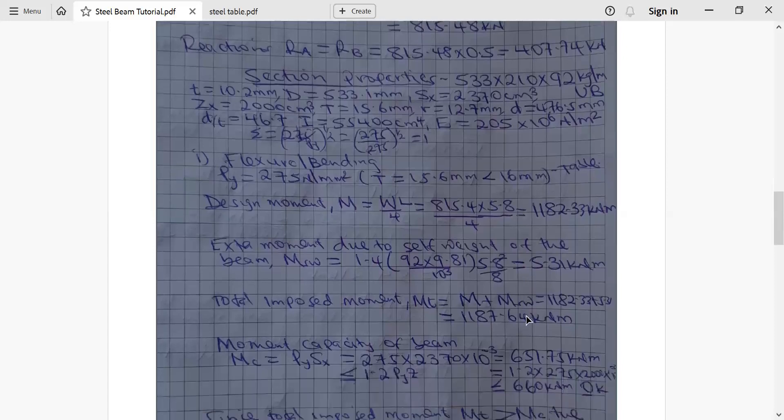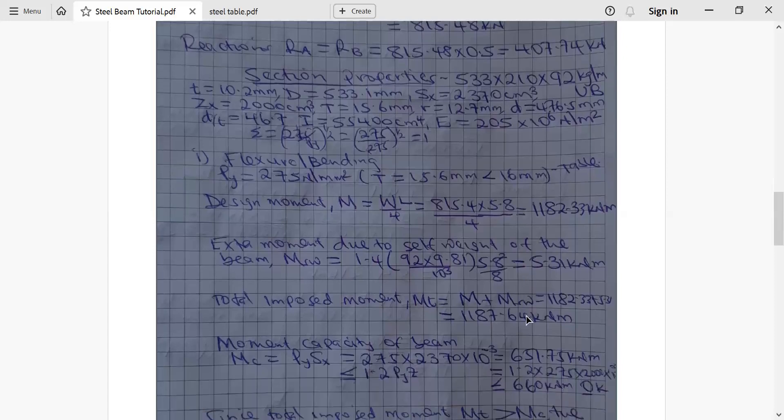Now as I said now here the total imposed moment, please understand, total imposed moment, don't add the two. Why? Because already the equation specified, the load given included self-weight. So we will use 1182.33 kilonewton meter. But if they had not specified it includes self-weight, we would have done it the way I've done here. So the total moment would be the sum of imposed moment plus sum of self moment from self-weight. But for this one, we will only use this moment of 1182.33.